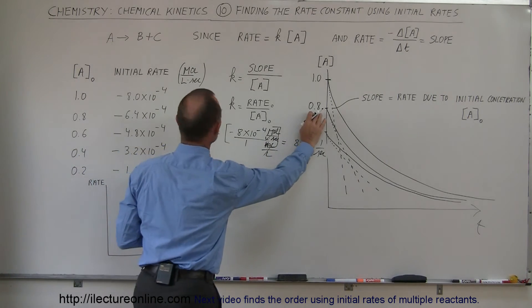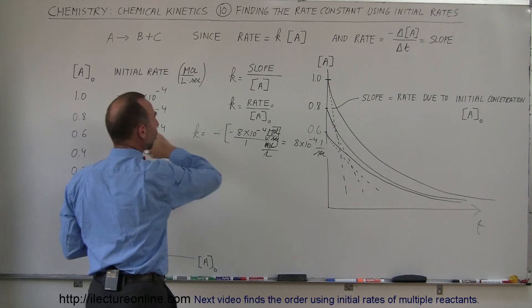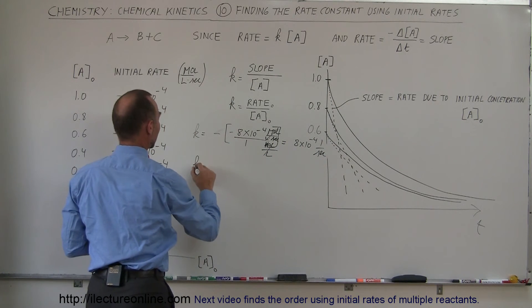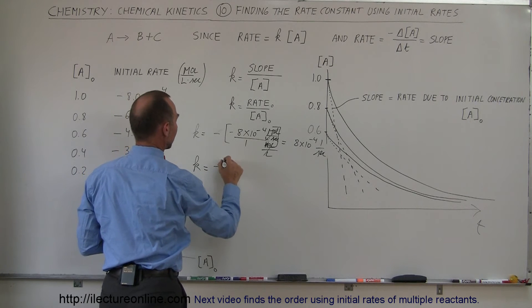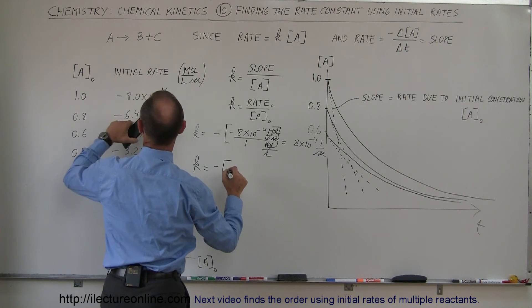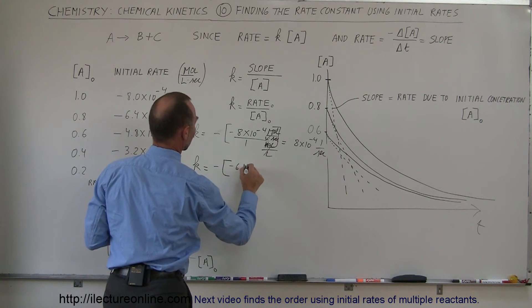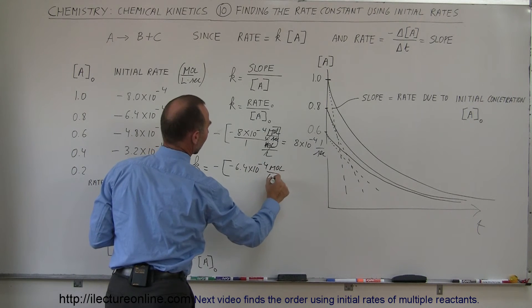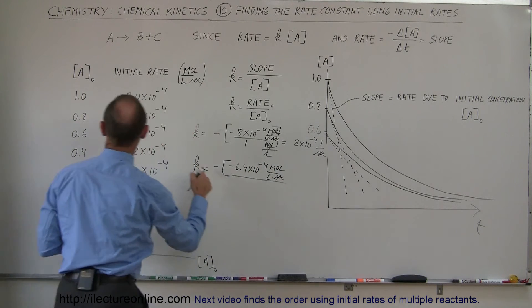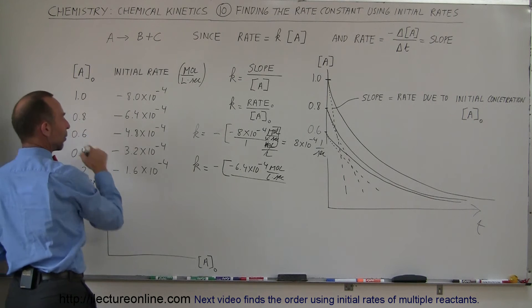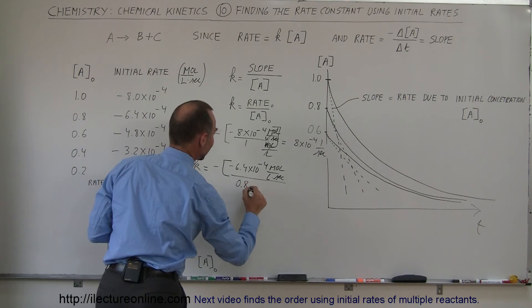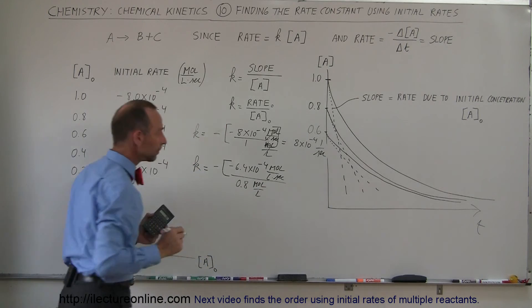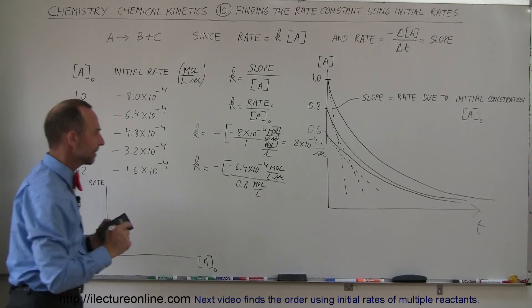Now we lower the concentration to 0.8 moles per liter and find out what our new rate is. K for the second point is the negative of minus 6.4×10⁻⁴ moles per liter per second, divided by the new concentration of 0.8 moles per liter. Notice we get the exact same value — 8×10⁻⁴ per second.